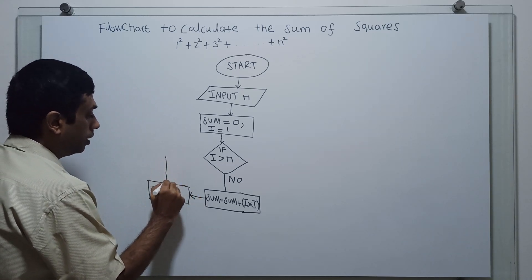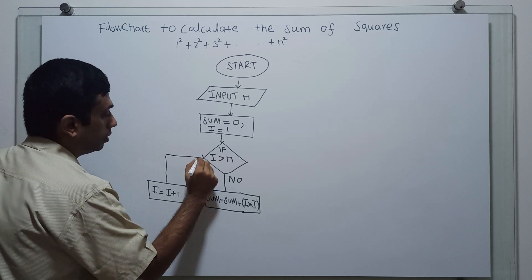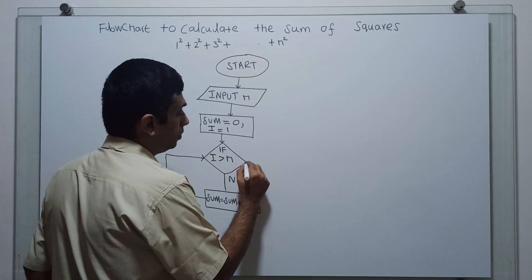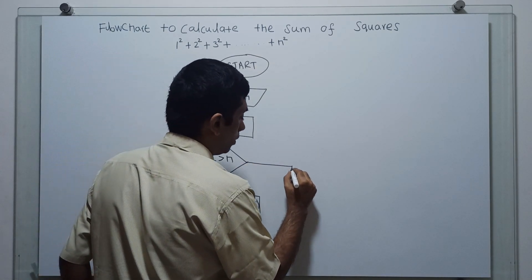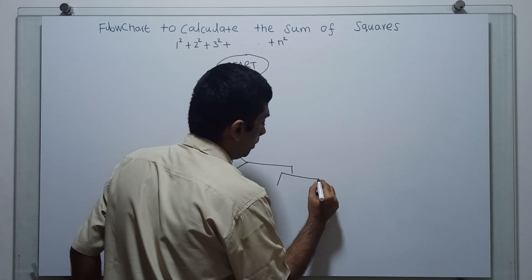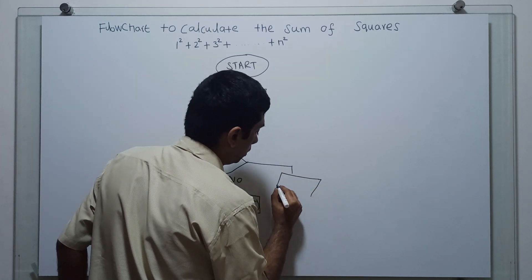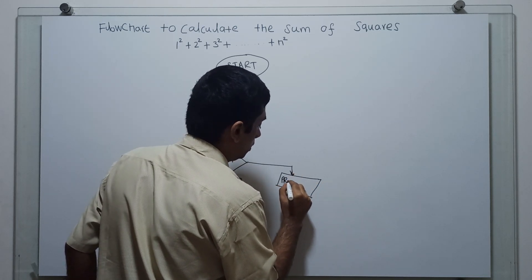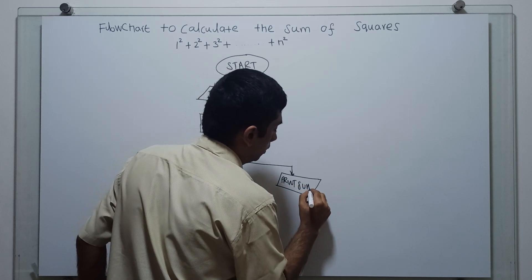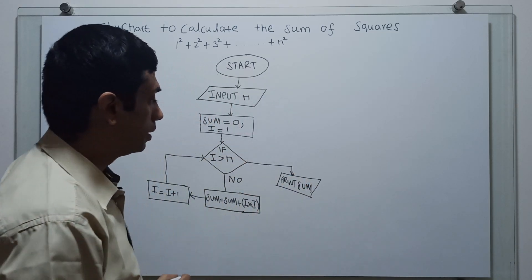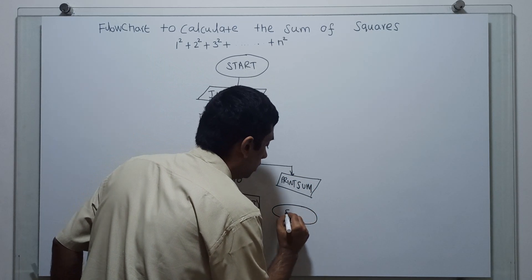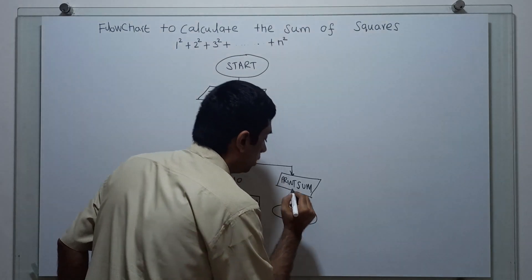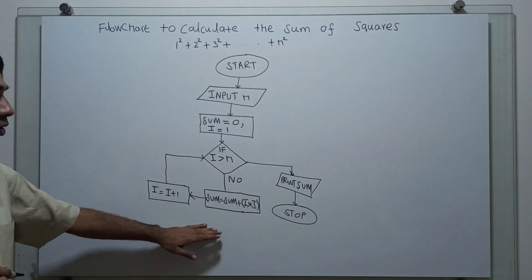I am looping back to the decision symbol. If i greater than n is true — 'yes' means I am coming out of the loop and printing the value stored in sum. This is the logical end of the flowchart.